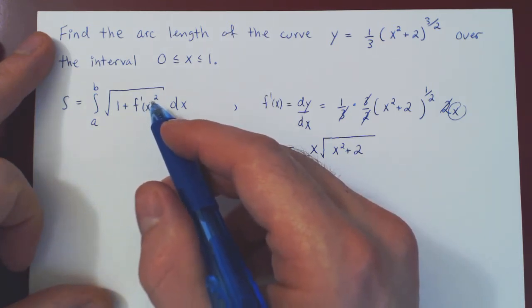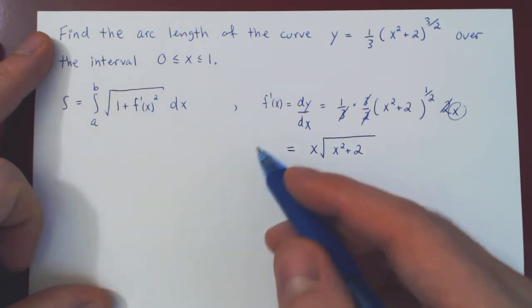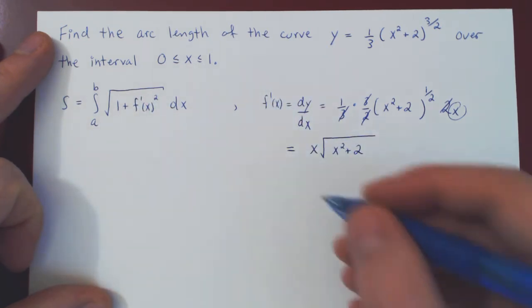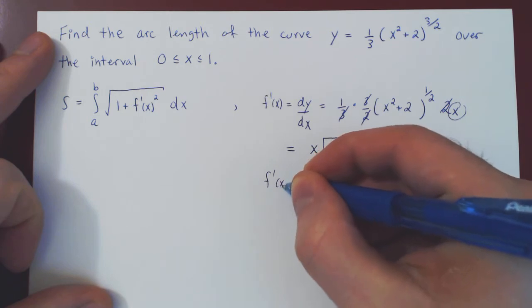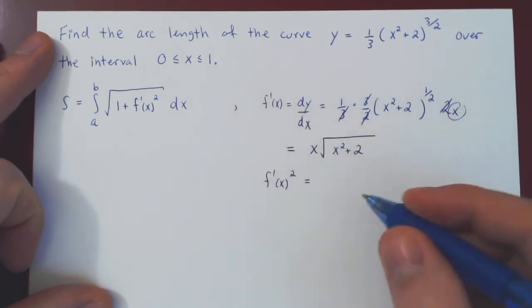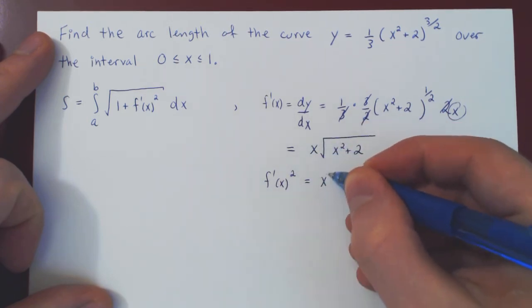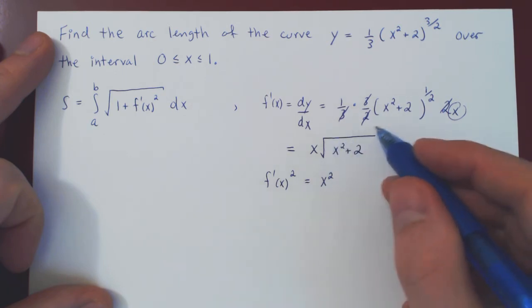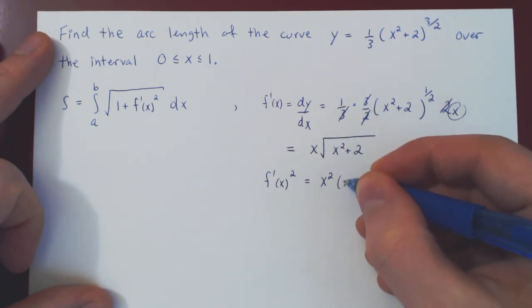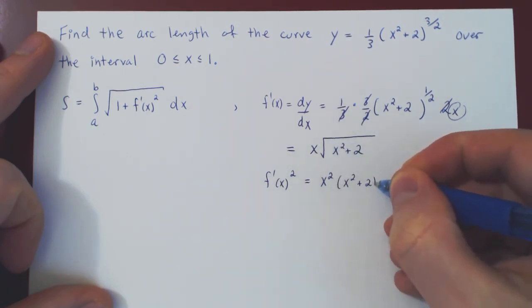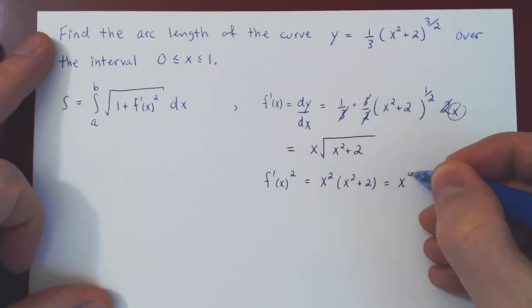Well, what we want is the derivative squared. So let's square both sides. f prime of x squared. Well, if you square x, you get x squared. Times, if you square the square root, the square root goes away and you're left with x squared plus 2. If you multiply, you'll have x to the 4 plus 2x squared.